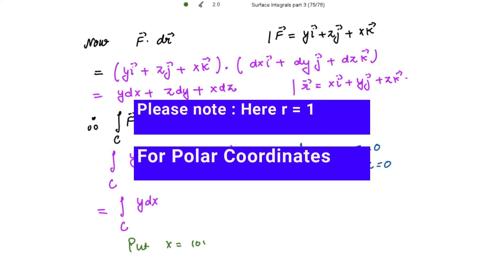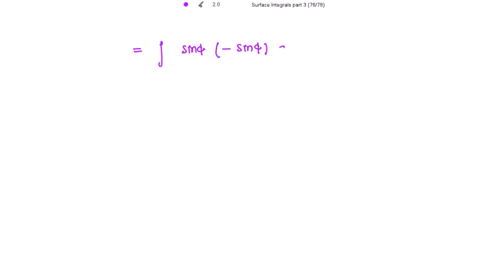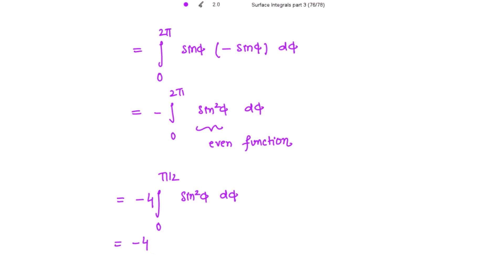Converting to polar coordinates: x = cos φ, y = sin φ, so dx = −sin φ dφ, with limits of φ from 0 to 2π. The integrand becomes y dx = sin φ · (−sin φ dφ) = −sin²φ dφ. We can take the limit from 0 to π/2 and multiply by 4. Using the reduction formula, the power of sin is 2, so in the numerator we subtract from odd numbers.